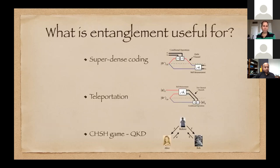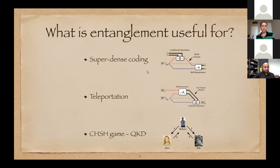What is entanglement useful for in these basic protocols? These are really the starting point of quantum information theory. Superdense coding was discovered in 1992 by Charlie Bennett and Steven Wiesner — Wiesner recently passed away. Teleportation was discovered a year later, a very famous protocol. These protocols taught us that the manipulation of quantum information is very different from the manipulation of classical information.